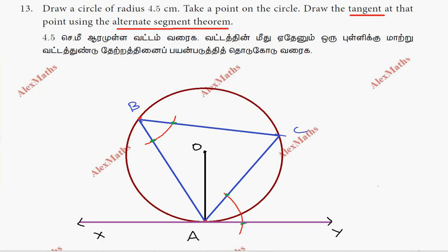We can see that angle ABC equals angle YAC. In the alternate segment theorem, the angle constructed gives us the tangent.